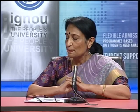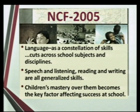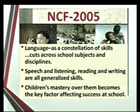So what is it that the National Curriculum Framework is saying? Language here has been considered as a constellation of skills, which basically means that language comprises a group of skills — reading, writing, listening, and speaking. That is what forms the constellation, and this constellation of skills cuts across school subjects. Mastery over all these four skills is important for children to gain mastery over subjects and to have success at school. In fact, many research studies point out that achievement in school is directly proportional to the mastery that children have over this constellation of skills.